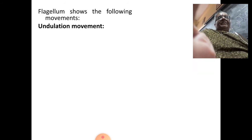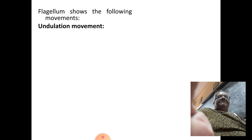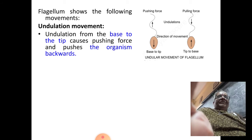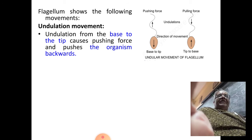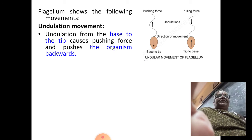Since the doublets' physical motion is limited by radial spoke attachment, they can just curve, causing a bend in the flagellum, and this bending has an important role in flagellar movement. Now, there are different types of movements exhibited by flagella. The first is undulation movement. There are two types: undulation from base to tip and undulation from tip to base. Undulation from the base to the tip causes a pushing force and pushes the organism backwards.